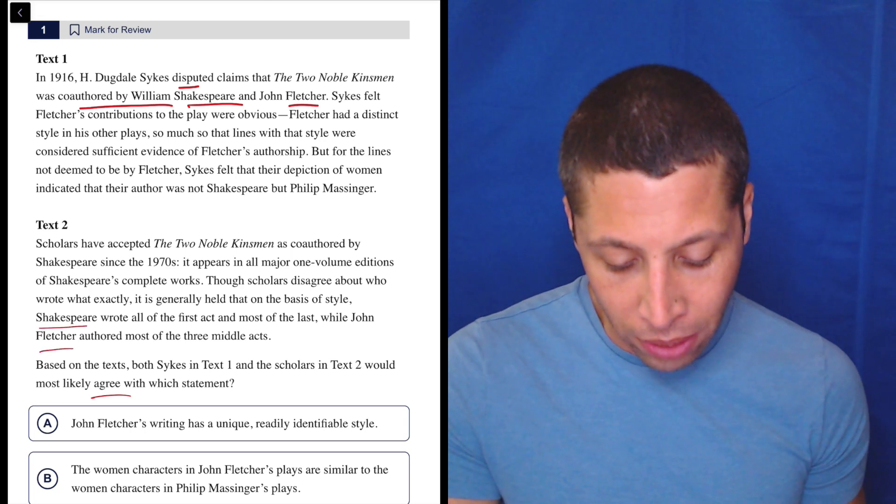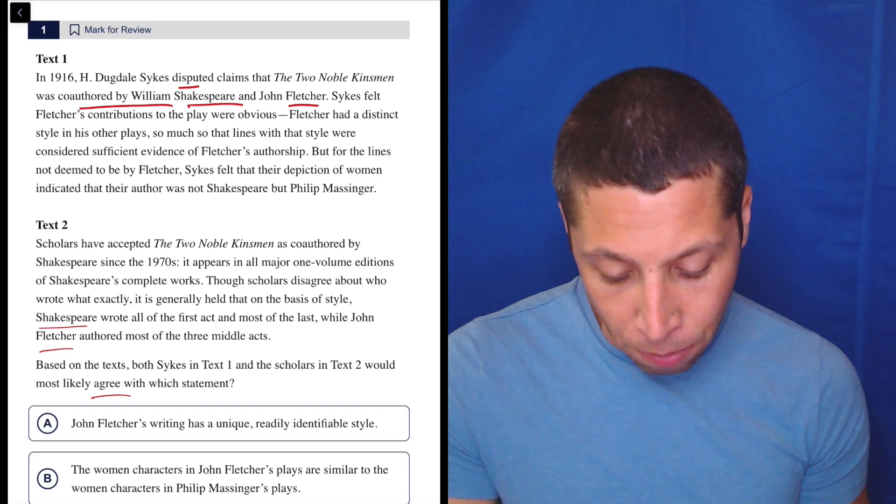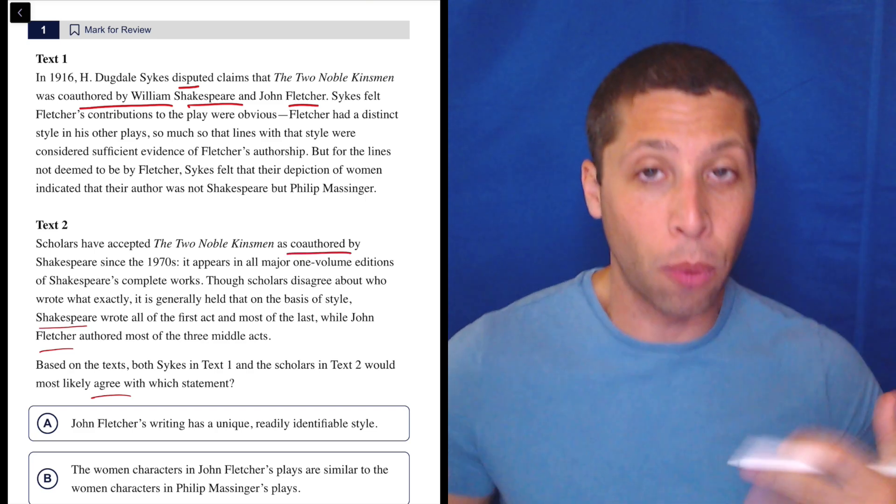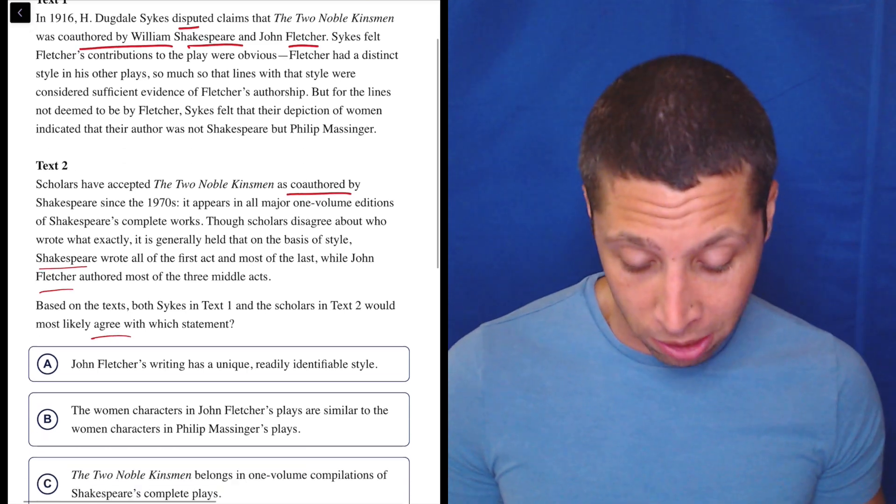Again, this is about Shakespeare and Fletcher, but this seems to be saying that they were co-authored. So these passages generally disagree, but what do they agree on? I really don't know. Let's look at the choices.